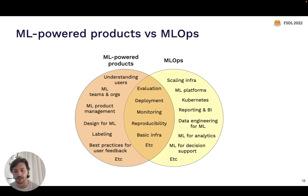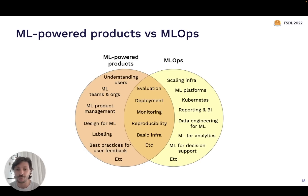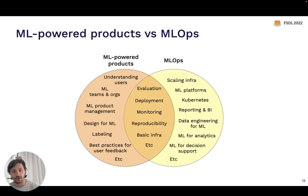We see ML-powered products as a distinct but overlapping discipline, because a lot of what it takes to build a great ML-powered product goes beyond the infrastructure side. It also focuses on how to fit machine learning into the context of the product or application you're building. Other topics in scope include: how to understand how users are interacting with your model, how to build a team that works effectively on ML systems, product management in the context of ML, best practices for designing products that use ML, data labeling, and capturing feedback from users.